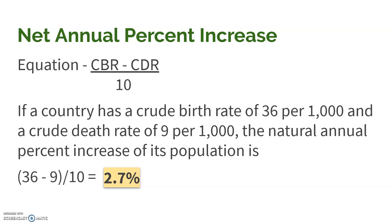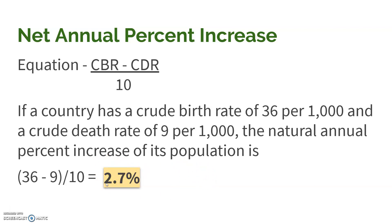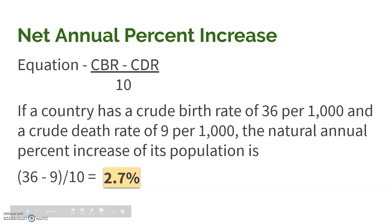So if the CBR is 36 and the CDR is 9, to figure out the net annual percent increase, you get the crude growth rate — which is 27 — and then divide it by 10, giving you the percent increase. That means the population is growing by 27 per 1,000 people, or at a rate of 2.7%.